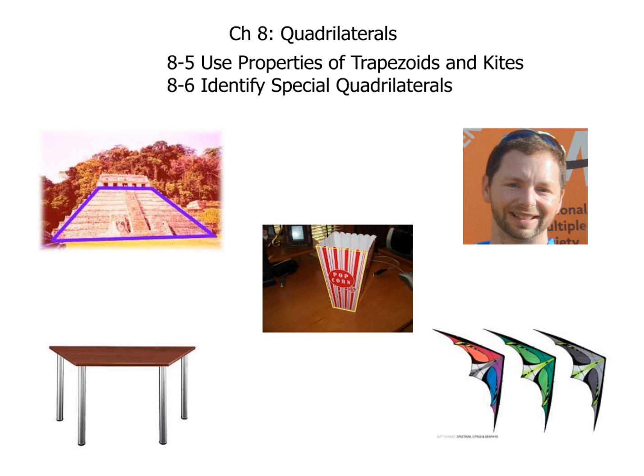All right, so here we go with our last piece in sections 8.5 and 8.6 on quadrilaterals. We're going to take a look at kites and different ways to identify special quadrilaterals, because we're going to take a look at a family tree for the quadrilaterals.